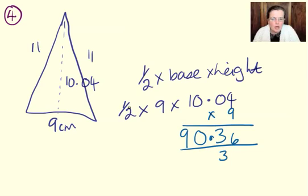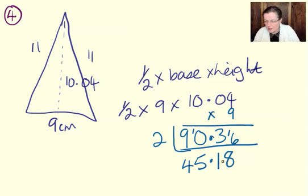But we want to do a half times that. So, I'm just going to get rid of that 3 and then divide it by 2 like this. Because I quite often make mistakes at that point. 2 into 9 goes 4, remainder 1. 2 into 10 goes 5. Bring down the decimal. 2 into 3 goes once, remainder 1. 2 into 16 goes 8. So, the answer we want is 45.18 centimeters squared.